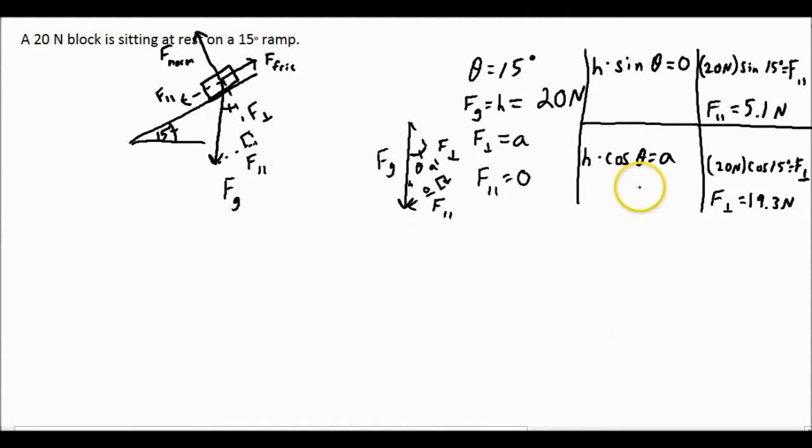Which, in turn, means that our frictional force is equal to, if this is in equilibrium, our frictional force is equal to our parallel. So our frictional force would be equal to 5.1 newtons. And our normal force, which is equal to the perpendicular, is equal to 19.3 newtons.